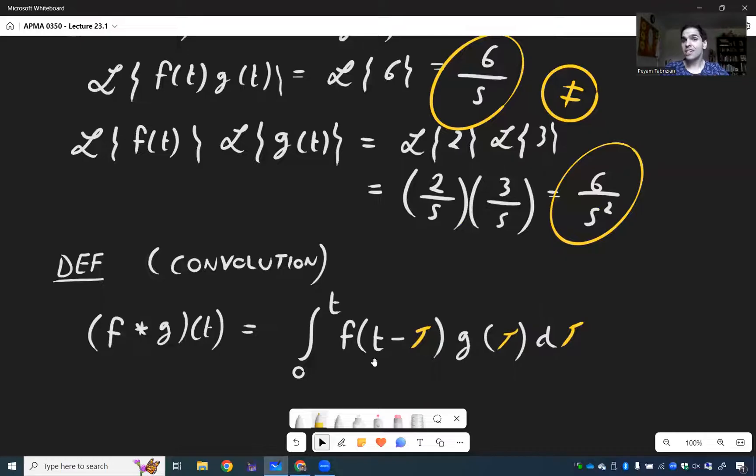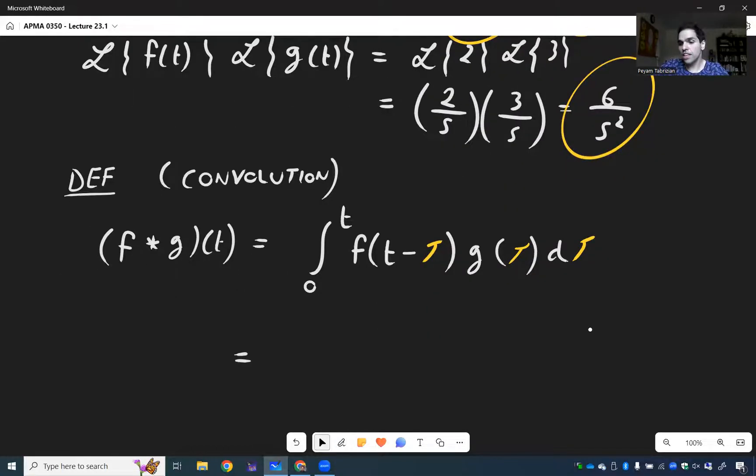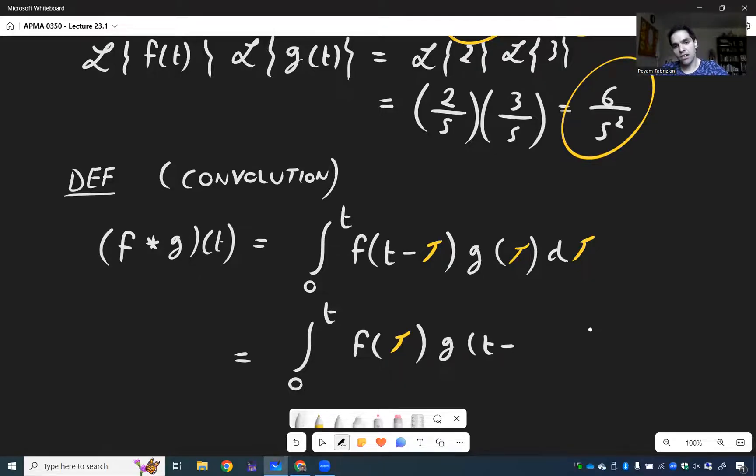That said, it turns out that this property is true if we replace multiplication by a cool new operation called convolution. And I will define it and give you a demo and then state the main fact. So, definition, convolution. If I write f star g of t, that's a new function called the convolution. And what it is, it's a bit weird, but it's the integral from 0 to t of f of t minus tau times g of tau d tau.